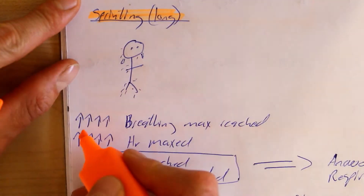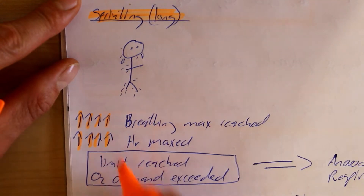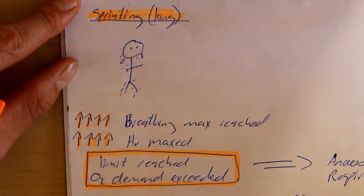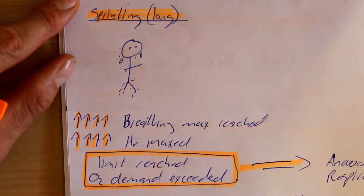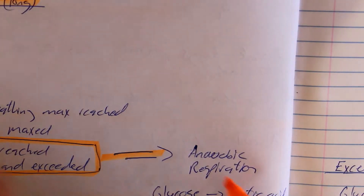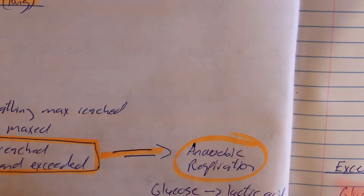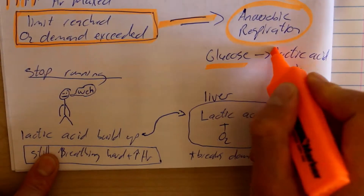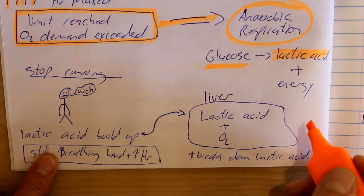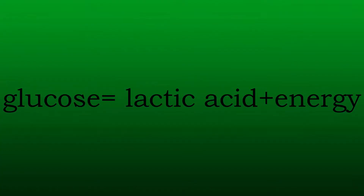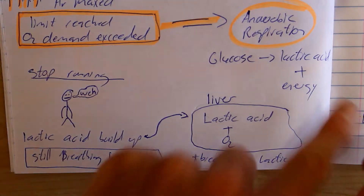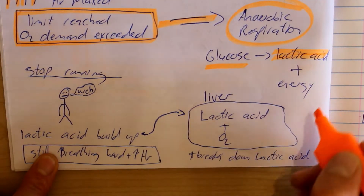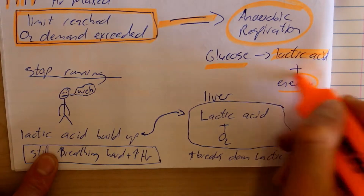If we start sprinting for a really long time, there's an intensely increased breathing rate and a very fast heart rate. Eventually we reach a limit where the oxygen demand is exceeded and aerobic respiration can no longer occur because there's not enough oxygen. Then we switch over to anaerobic respiration, where glucose is converted to lactic acid and energy. This is not as effective as aerobic respiration because it produces a lot less energy, but because there's no oxygen, our bodies have no choice.